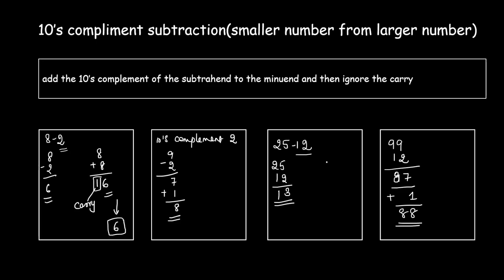Now add the tens complement to the minuend: 25 plus 88. 8 plus 5 is 13, carry 1; 8 plus 2 is 10, plus 1 is 11. The result is a three-digit number 113 — the leading digit is the carry. Ignore the carry; the final result is 13, matching the regular subtraction.